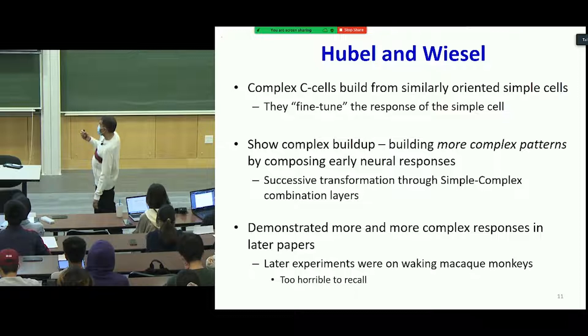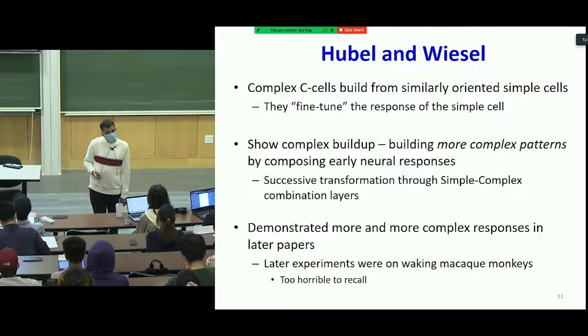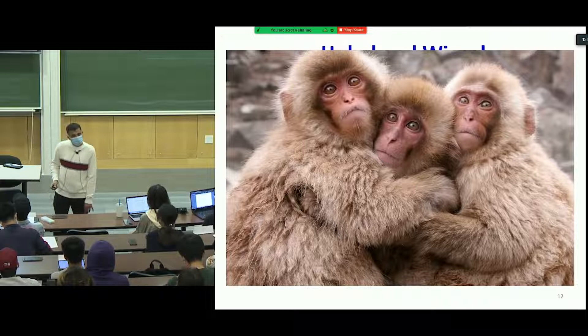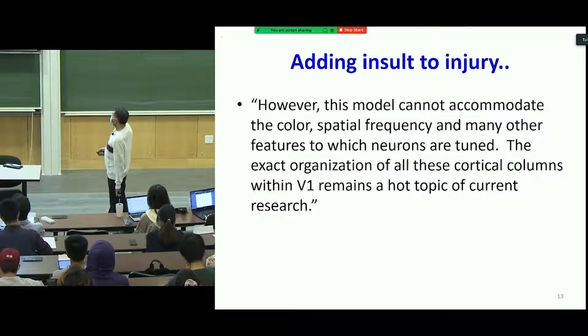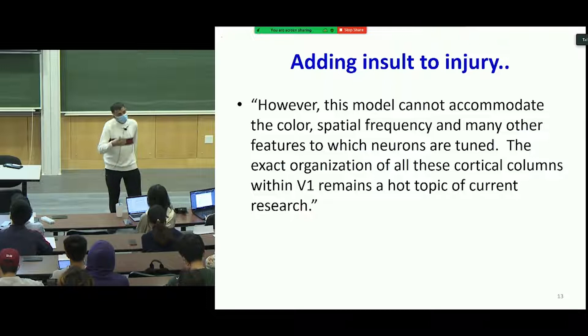They showed this kind of building up of more complex patterns by composing early neural responses. This is where interest in the experiments wanes, because subsequent experiments were on monkeys. They also noted that this model cannot accommodate color, spatial frequency, and many other features to which neurons are tuned — so maybe the entire experiment was limited in scope.